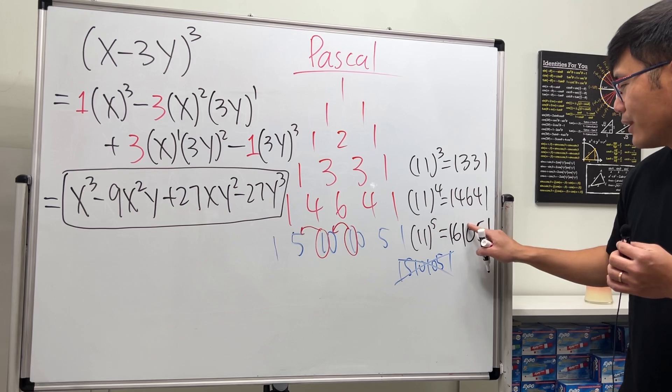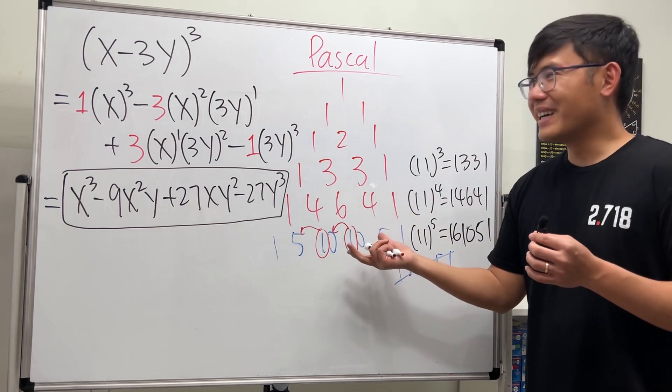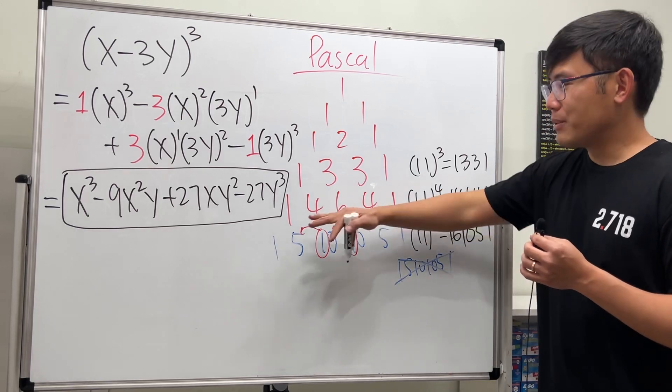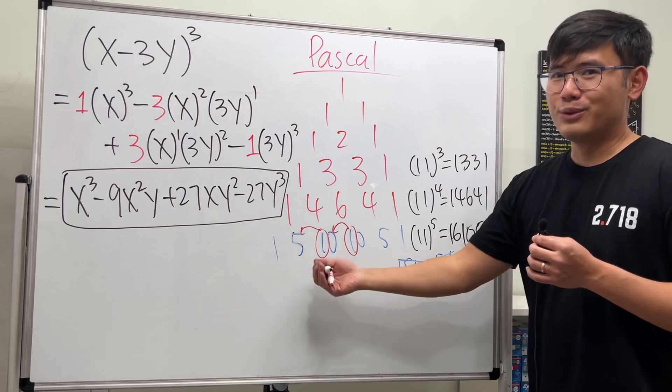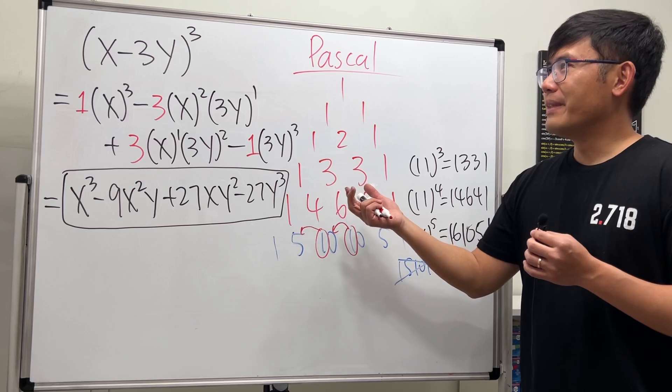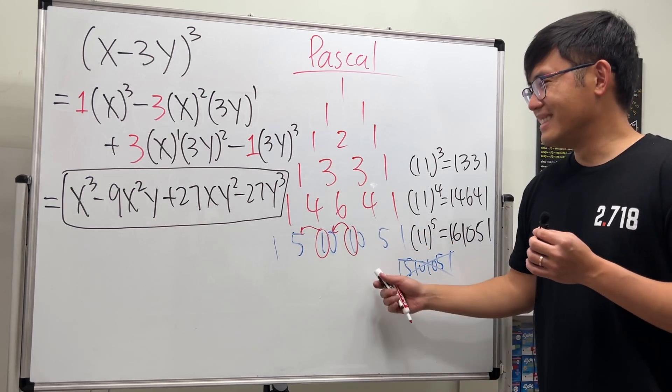So yeah, unfortunately, if you want to figure out the coefficients, you can do 11 to the fourth power up to here, but anything after that, I will still recommend you guys to just write down the rows. So maybe you hope that nobody asks you like the fifth power or like the seventh power. But anyway, that's it.